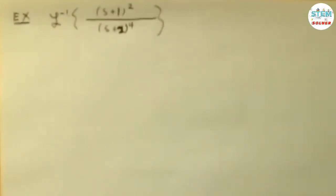A lot of people do partial fractions on this, and that will work, but it will take you a while. You have a of s plus 2, b of s plus 2 squared, c of s plus 2 cubed, d of s plus 2 to the 4th, and it's going to take you a long time.